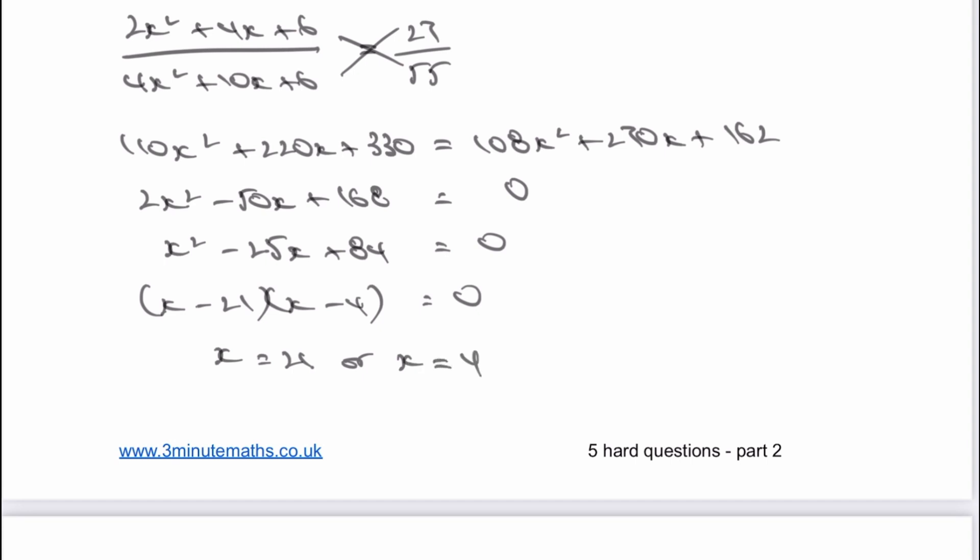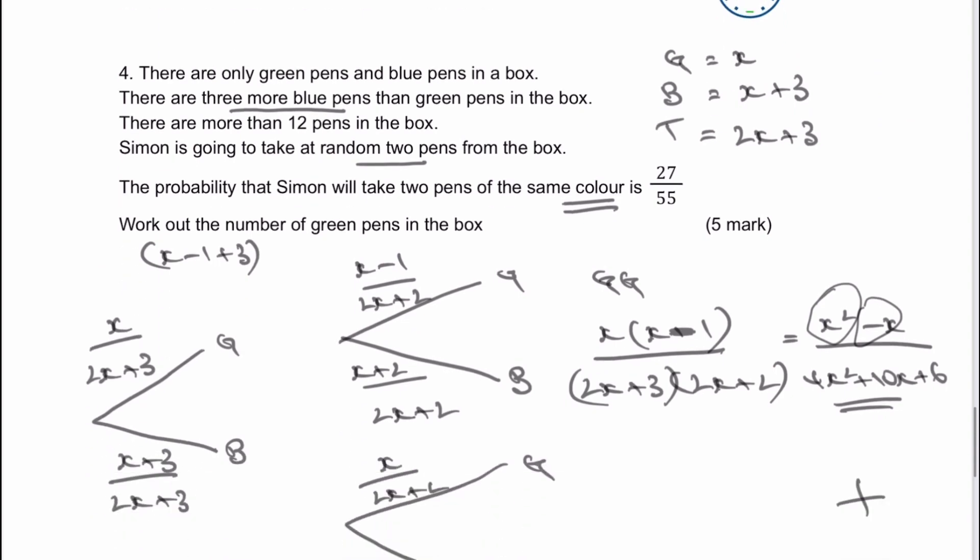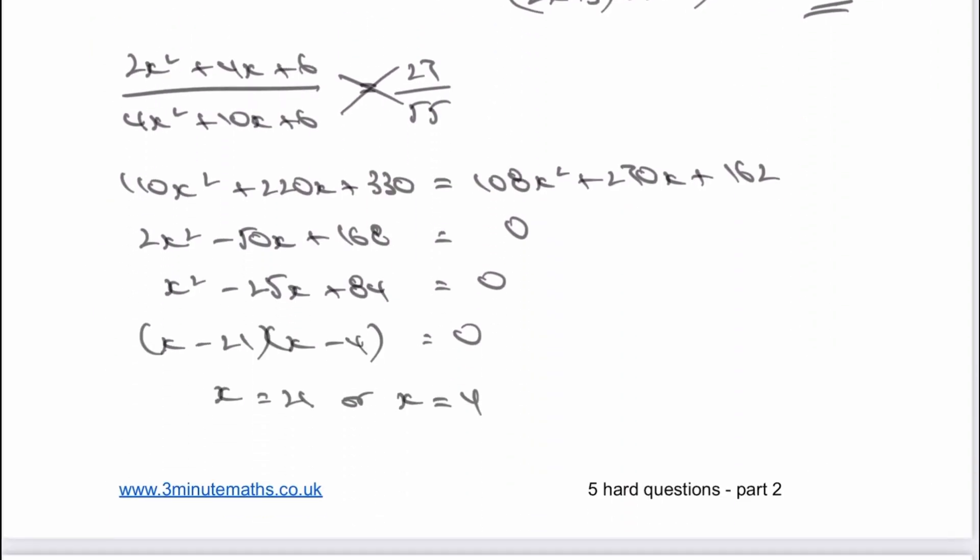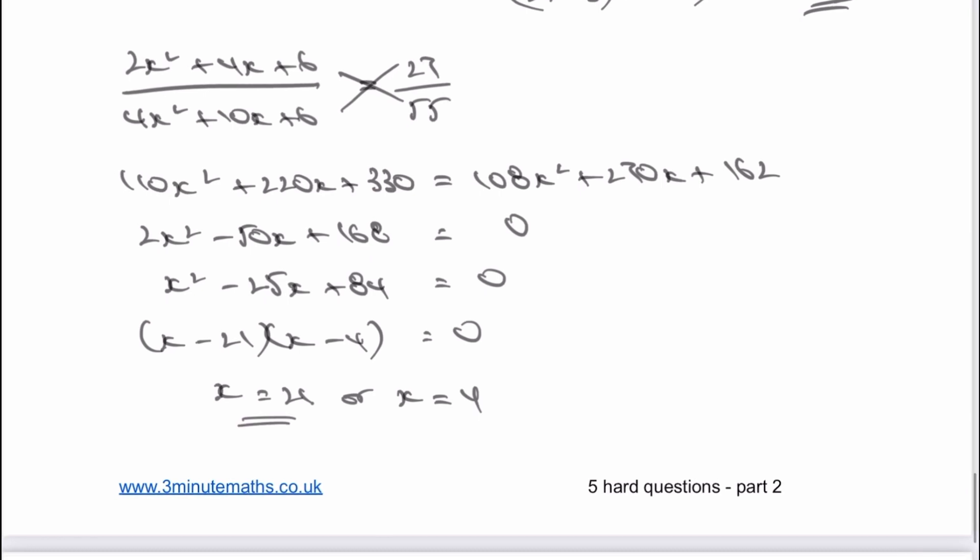If we go back to the original question, it says there are more than 12 pens in the box. Therefore, the value of green pens, which if you remember was the value of x, is more than 12. So therefore, there must be 21. Green pens equals 21. That would be the answer to this particular question.